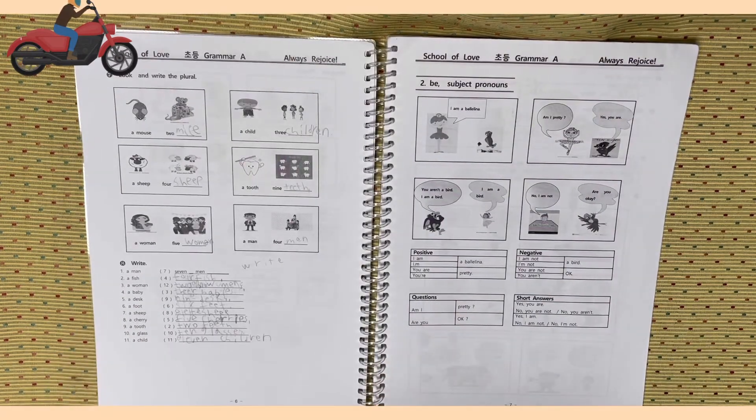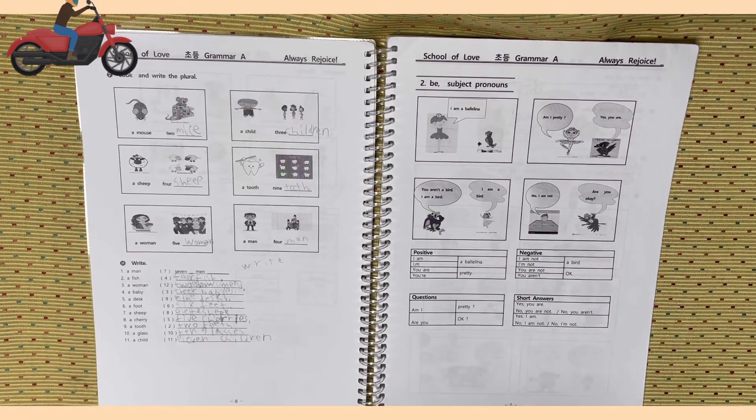Look and write the plural. 맞는 빈칸에 맞는 단어 복수형을 쓰면 됩니다. 앞에 쪽을 참조하시면 됩니다. A mouse, two blank, a child, three blank, a sheep, four blank, a tooth, nine blank, a woman, five blank, a man, four blank. Activity eight.